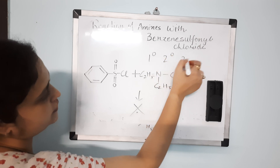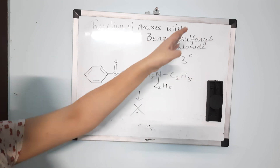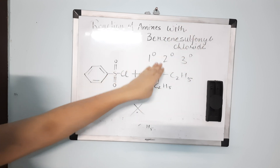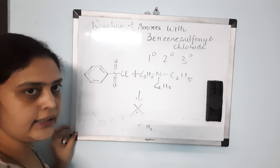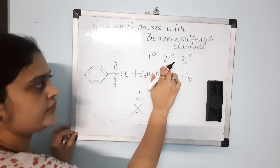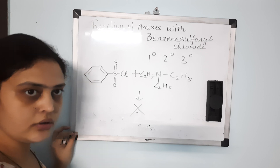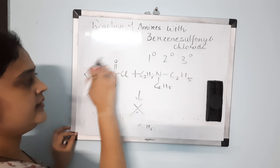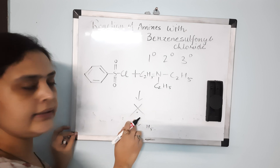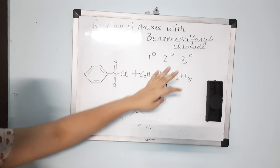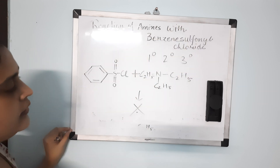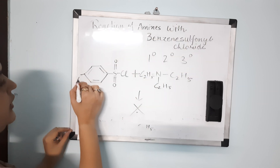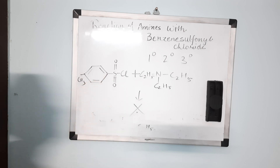So, benzene sulfonyl chloride can be used to differentiate between primary, secondary, and tertiary amines: with a primary amine the product is soluble in alkali; with a secondary amine the product is insoluble in alkali; and with a tertiary amine, benzene sulfonyl chloride does not react at all. One more thing — nowadays, instead of benzene sulfonyl chloride, we use toluene sulfonyl chloride.